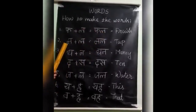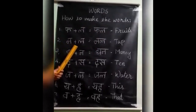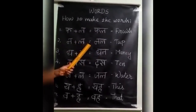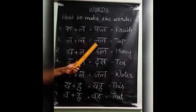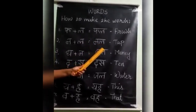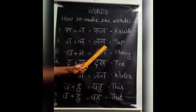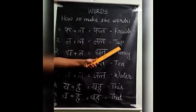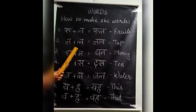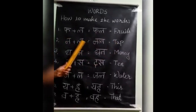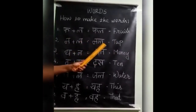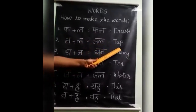The next one. Na plus la is equal to — what is this? Na ill. Nal. Nal means tap. Na plus la is equal to nal. Nal means tap.